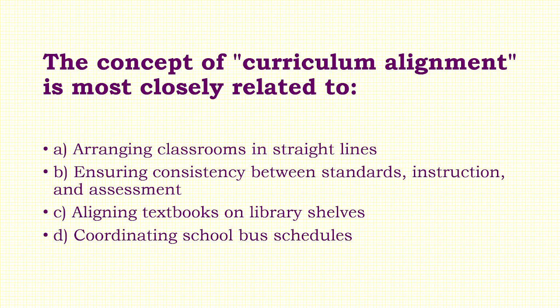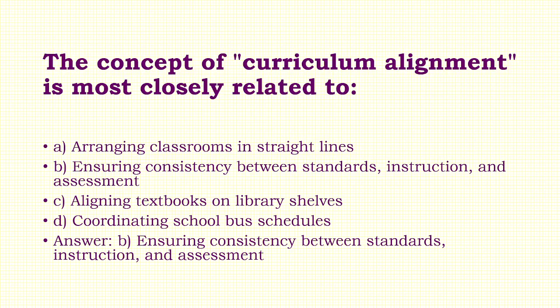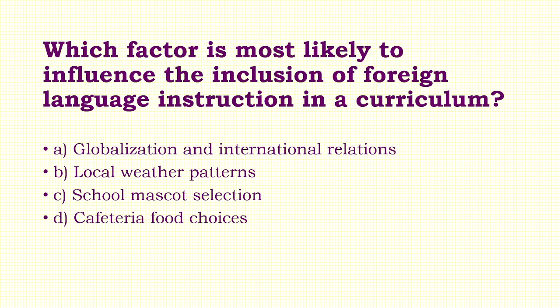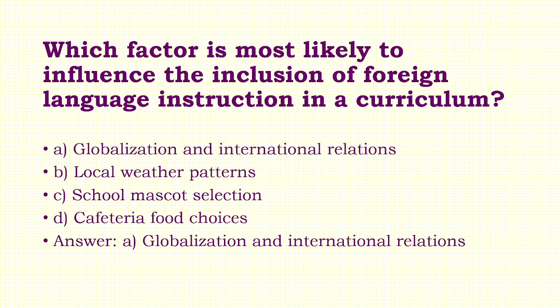Question 45: The concept of curriculum alignment is most closely related to: A) Arranging classrooms in straight lines, B) Ensuring consistency between standards, instruction and assessment, C) Aligning textbooks on library shelves, D) Coordinating school bus schedules. Answer: Option B — Ensuring consistency between standards, instruction and assessment. Question 46: Which factor is most likely to influence the inclusion of foreign language instruction in a curriculum? Options: A) Globalization and international relations, B) Local weather patterns, C) School mascot selection, D) Cafeteria food choices. Answer: Option A — Globalization and international relations.